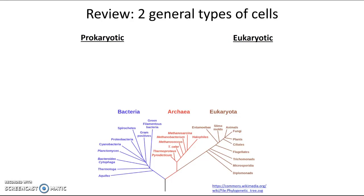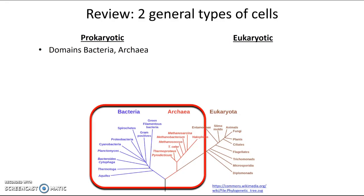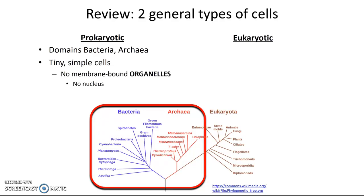Prokaryotic cells are found in organisms in the domains bacteria and archaea, and they tend to be really tiny, simple cells. They don't have a whole lot going on inside them — they don't have any membrane-bound organelles, and they don't have a nucleus.